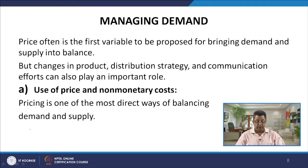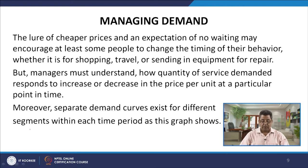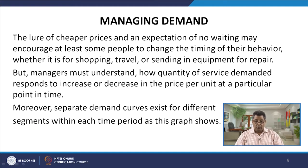The first approach within marketing mix elements is the use of price and non-monetary costs. Pricing is one of the most direct ways of balancing demand and supply. The lure of a cheaper price and no waiting may encourage at least some people to change the timing of their behavior — for shopping, travel, or equipment repairs — such as choosing leisure travel during off-peak periods. Managers must understand how quantity demanded responds to price changes at a particular point in time.